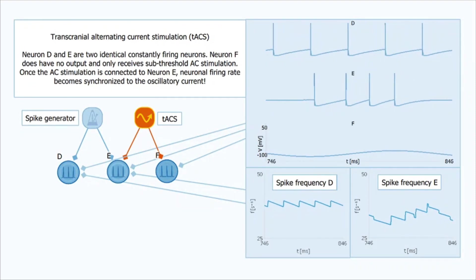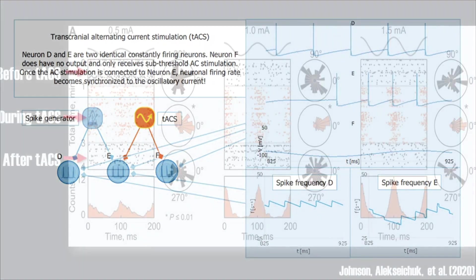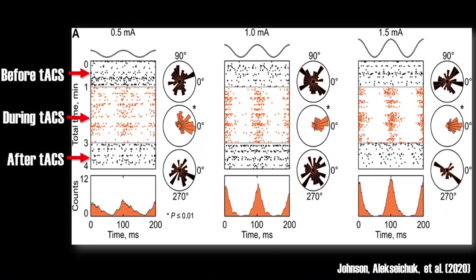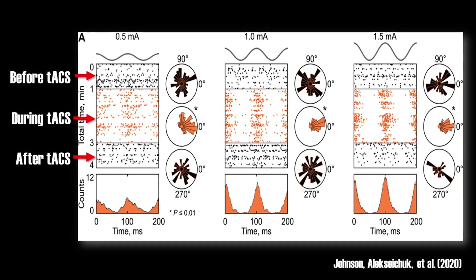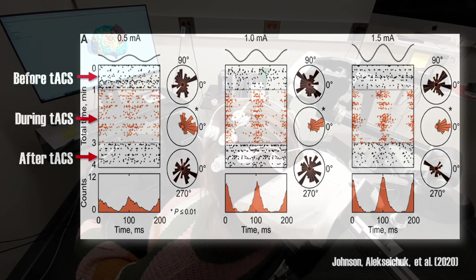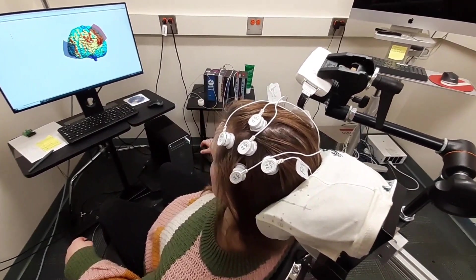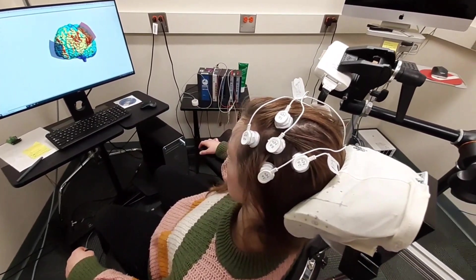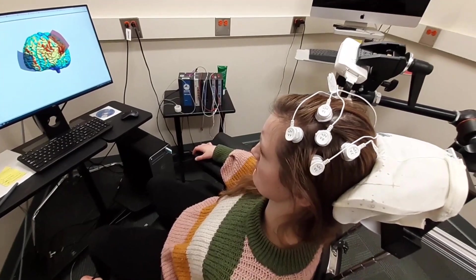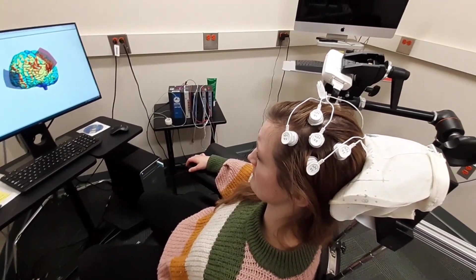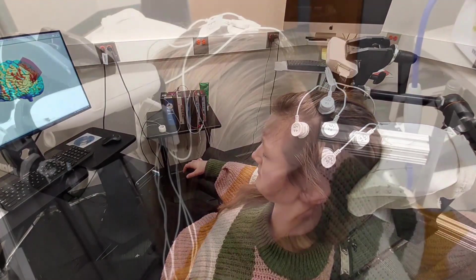Now such computer simulations are nice, but does it work also in reality? Animal studies have indeed shown that firing rates of neurons become more synchronized in the same frequency as the TACS. In humans, it is much more difficult to get direct evidence. EEG or MEG recordings would be the best way to measure brain oscillations, but the signal is contaminated when TACS is applied. However, indirect evidence suggests that TACS indeed can affect brain oscillations also in humans.